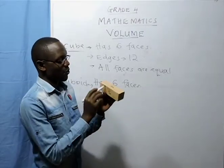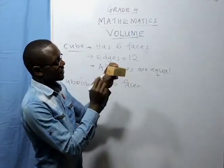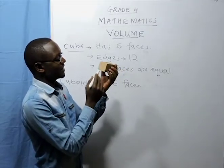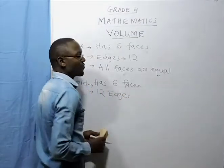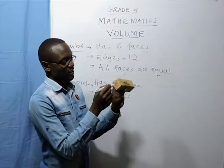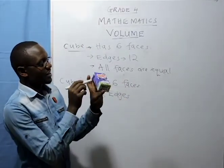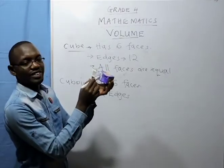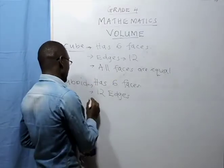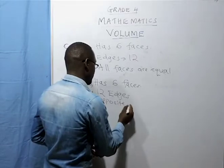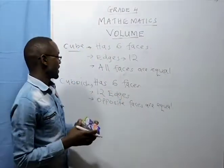So how many edges does a cuboid have? We have one, two, three, four — those are the long edges — then five, six, seven, eight, and on the other side nine, ten, eleven, and twelve. So just like a cube, it has twelve edges. Are all faces equal? No. This face is not equal to this face. This face on this side is equal to this face on the other side. This face at the back is equal to this face on this part. The face at the top is equal to the face at the bottom. So we say that in a cuboid, opposite faces are equal. That is what differentiates a cuboid from a cube.